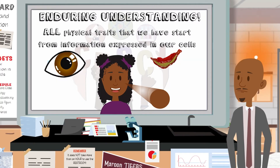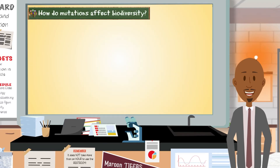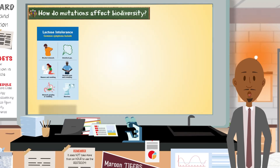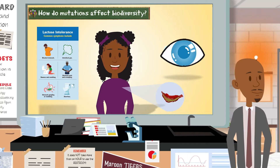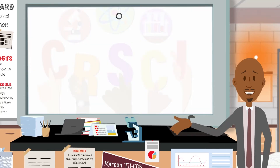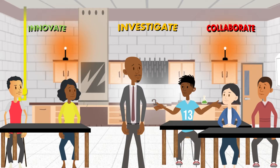Since all physical traits that we have start from information in our cells, that means even things like being lactose intolerant, having sickled blood cells, even having blue eyes — these are all due to mutations. And genetic mutations are the sole source of all biodiversity. So, like, what do we do to avoid getting these mutations? Because I don't want any.